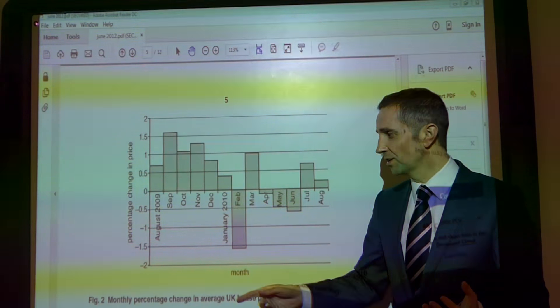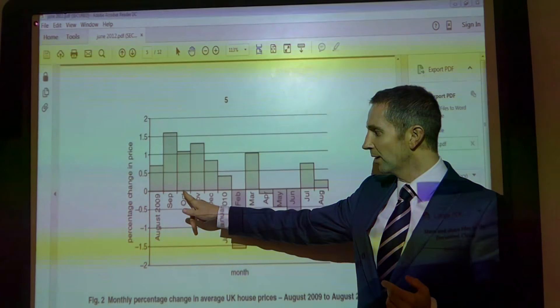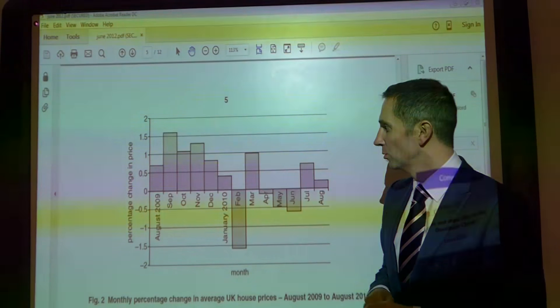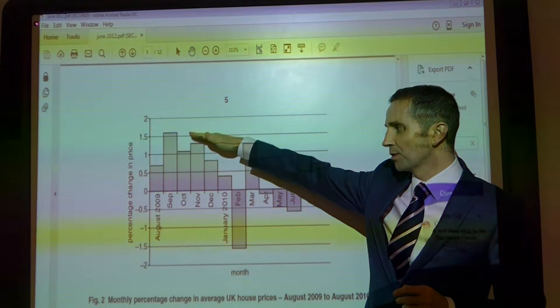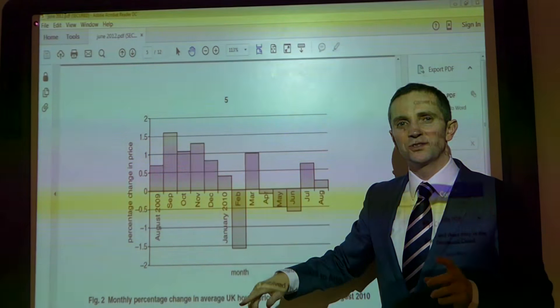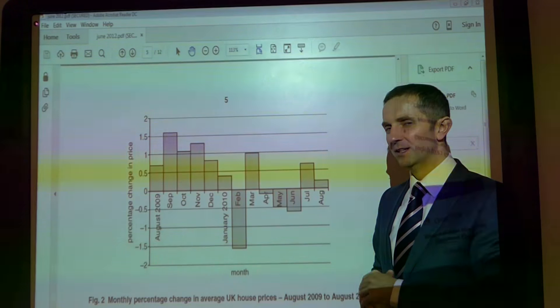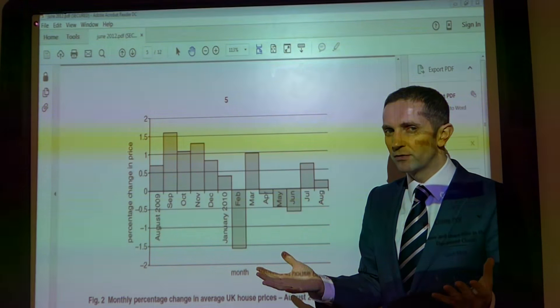and then they see that the bar right next to it is only sitting on 1.1%. And so when they are asked to describe the data, what they say is happening to house prices is they say that house prices have fallen from September until October. Well, of course, you and I know that that is not the case because as long as the bars are positive, house prices are always rising.